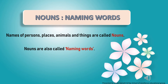Persons have names. Places have names. Animals, birds and insects have names. Things have names. Fruits and vegetables have names. Everything has a name.